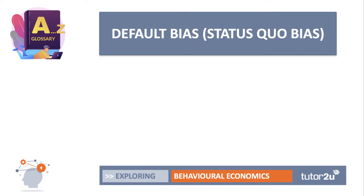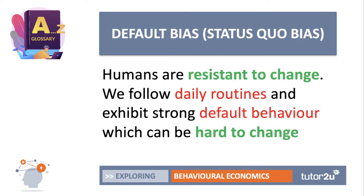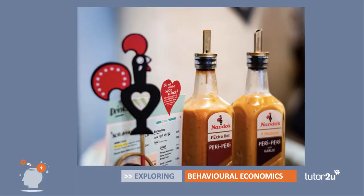The first one is the default bias, otherwise known as the status quo bias. This is where humans are often very resistant to change — they don't like change in their lives. They follow well-established daily routines that exhibit strong default behaviour, and these can be quite hard to change. Status quo bias is when people stick with a previous decision even if it's perhaps no longer the most appropriate decision to make. A good example would be menu habits when we go to places like Nando's — nearly always having the same items regardless of the situation.